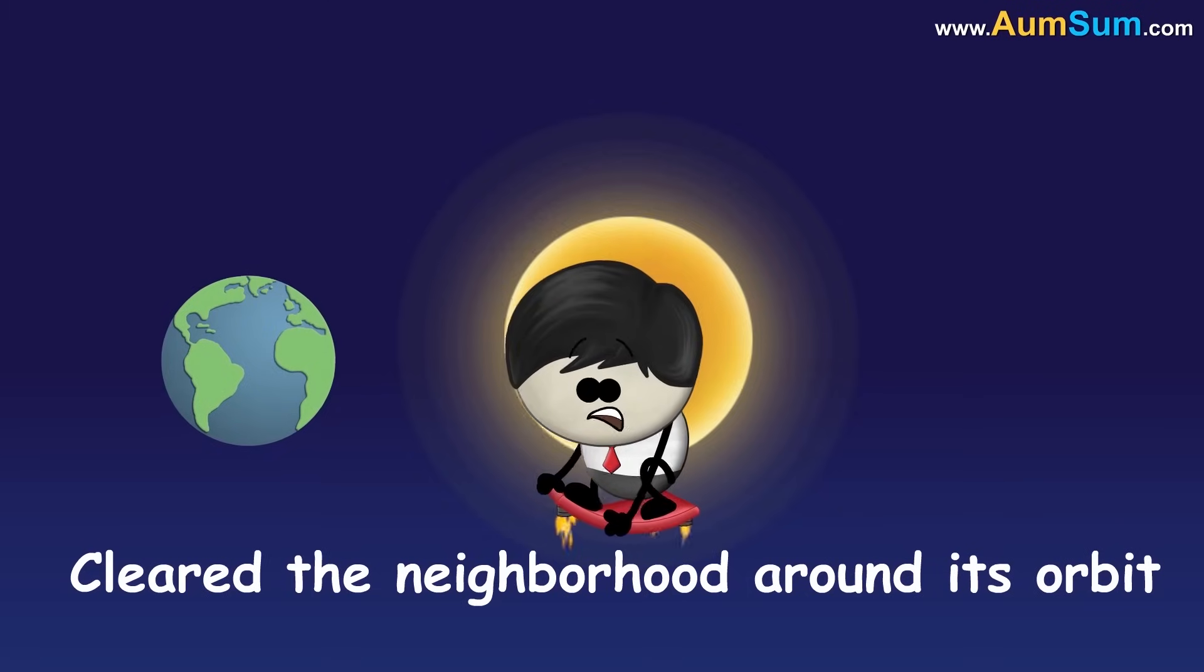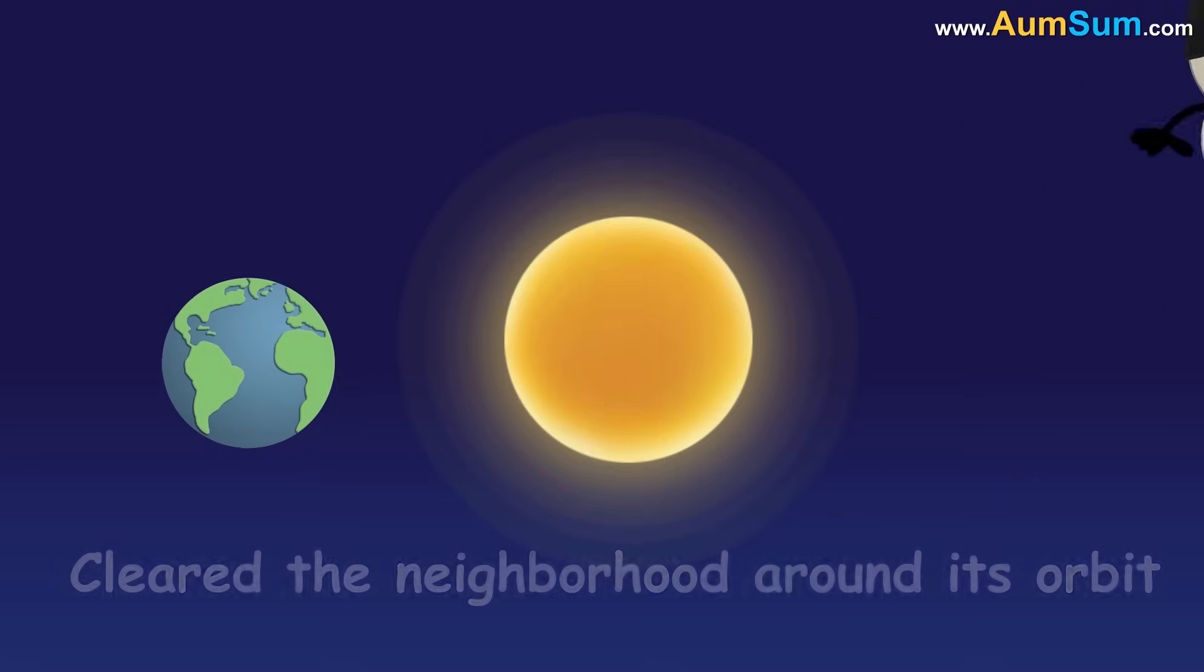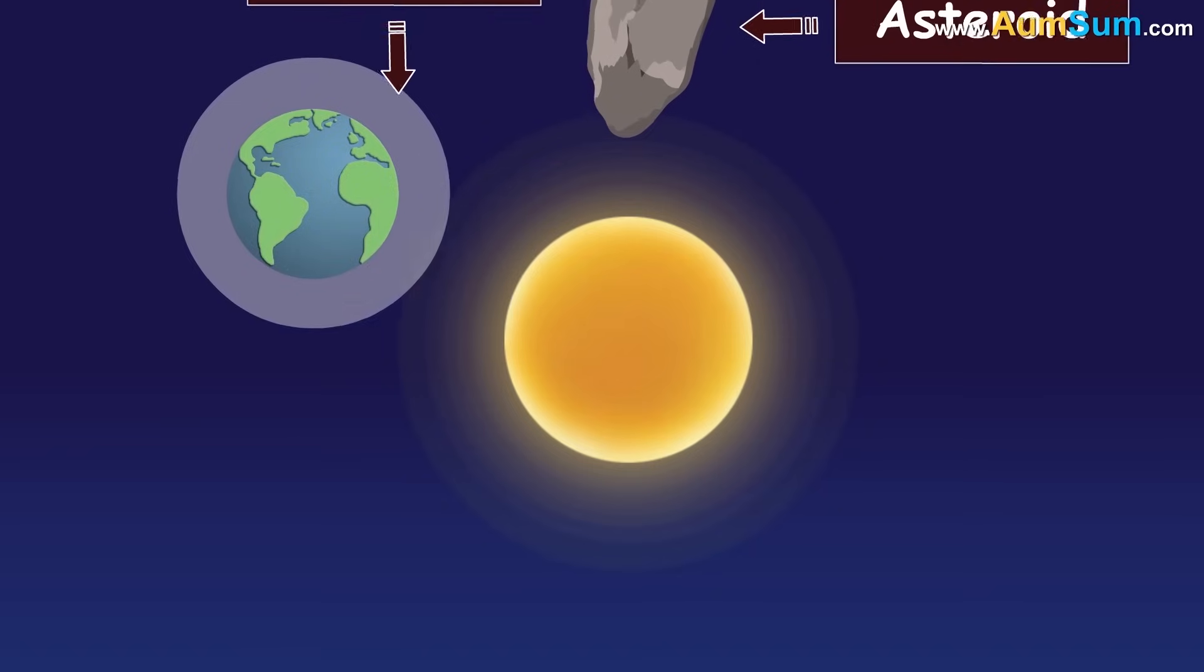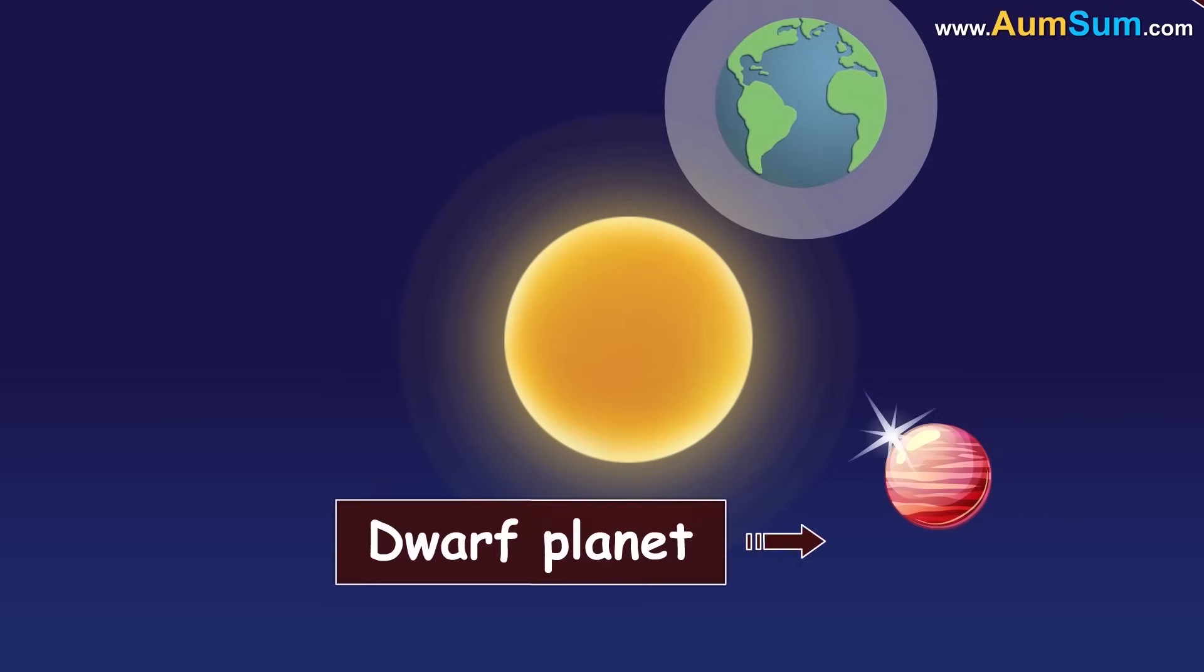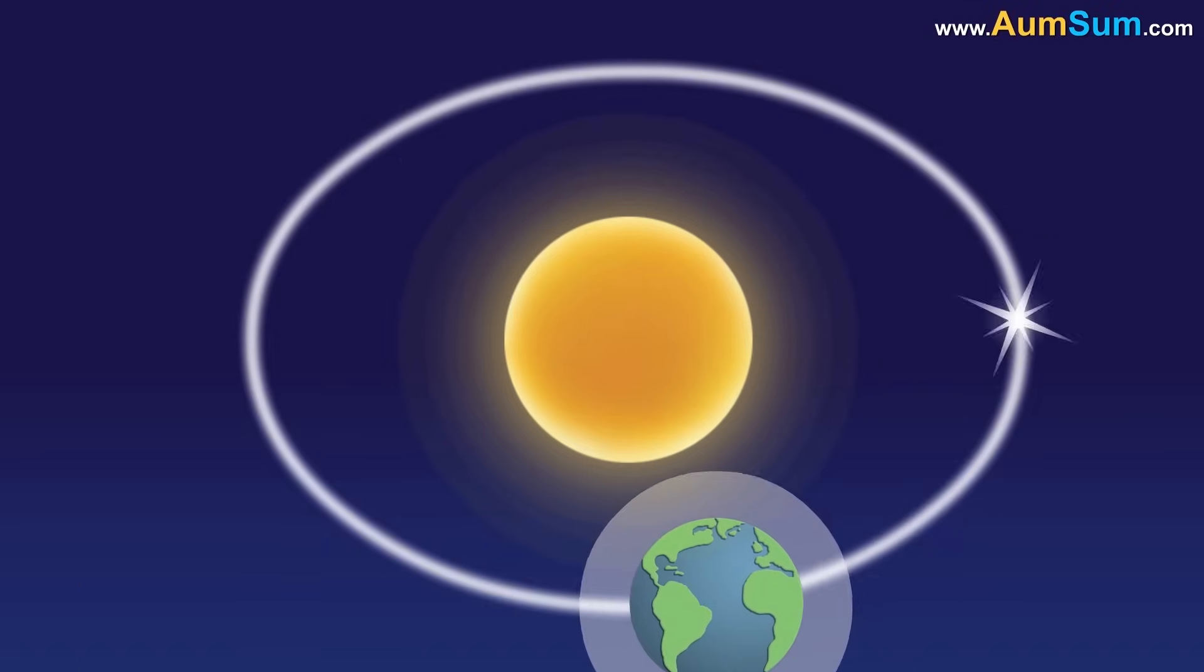What does this mean? It basically means that using its gravity, a planet should have removed asteroids and dwarf planets out of its path, thus cleared its neighborhood.